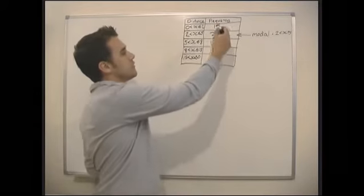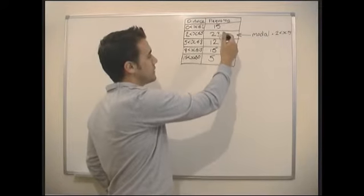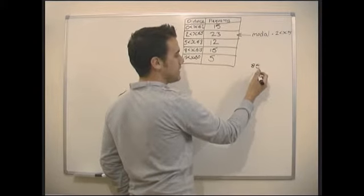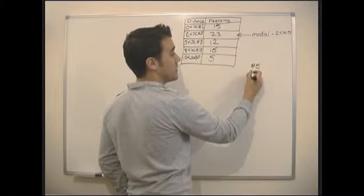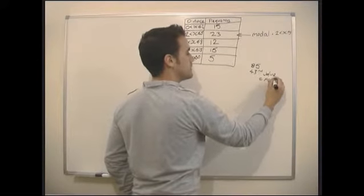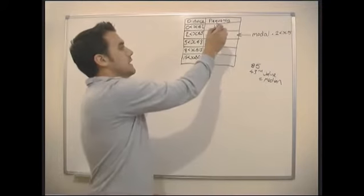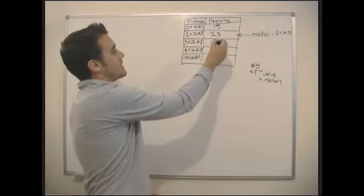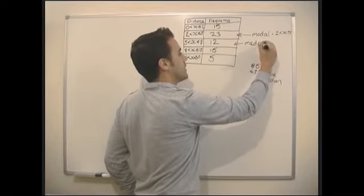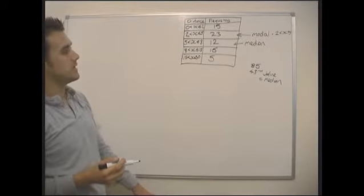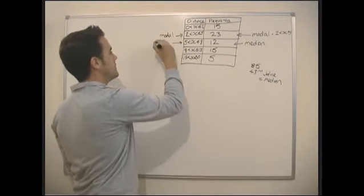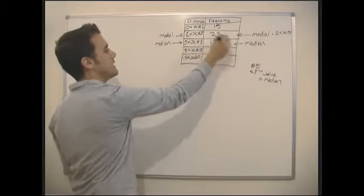Now, the median again, we just need to add them all up. So we've got 30, 50, so we've got 85 people in total here. So the middle value of 85, divided 85 by 2, is going to be 42 and a half. So the 43rd value is going to equal the median. So where's that going to fall? 15 plus 23 gives us 38, so actually, the median value is going to be somewhere in here. So the median value is going to be in there.